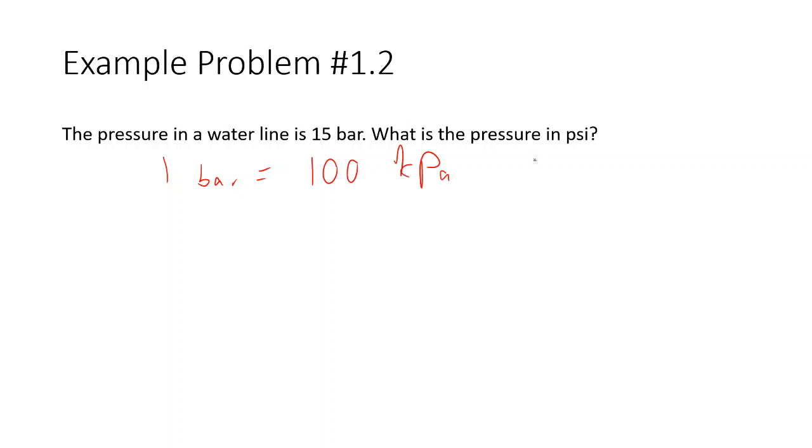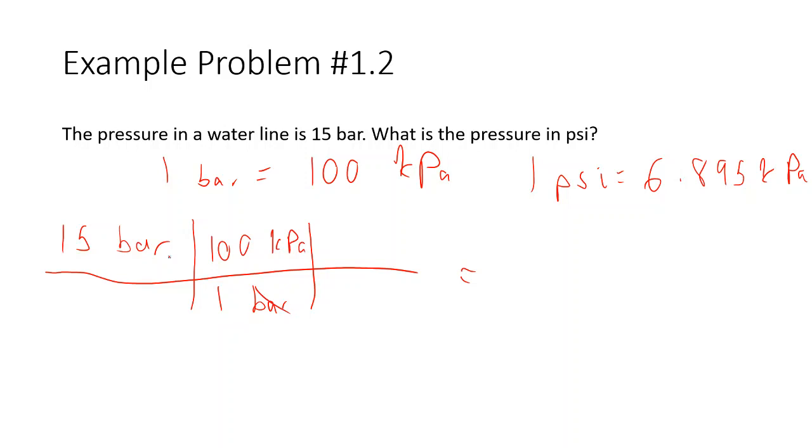And from before, we know that one psi equals 6.895 kPa. So I'm starting from 15 bar and I want to get to psi. I'm going to make my chart here. We're going to do two unit conversions to give us our final answer. So first we're going to convert to kPa. So we put one bar down here in the denominator and 100 kPa in the numerator. Bars cancel.